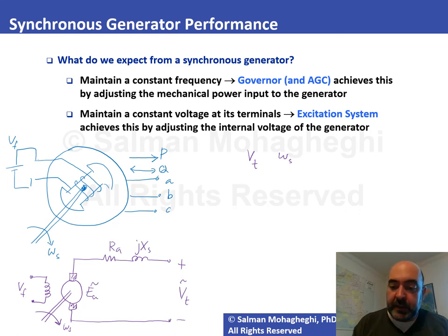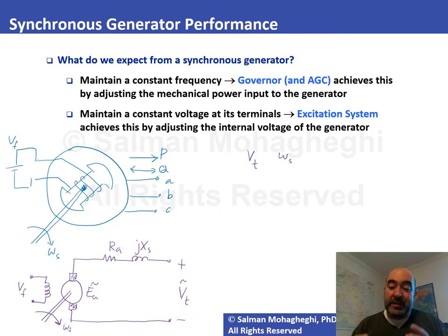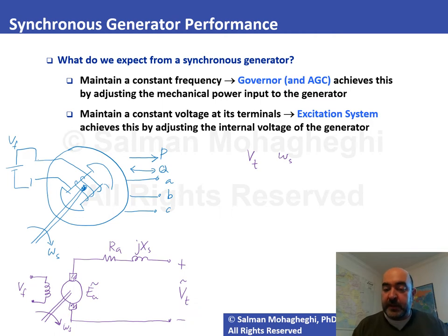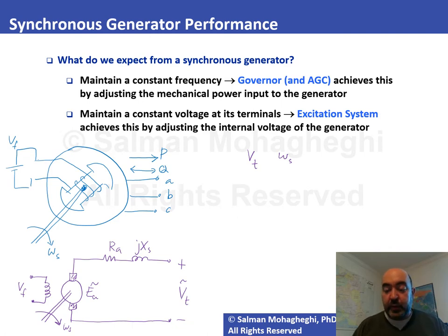The system frequency is directly related to rotor speed. If frequency is low, spinning the rotor faster increases it; if high, slowing it down reduces it. The controller responsible for maintaining rotor speed is the governor system, which monitors output frequency and speeds up or slows down the prime mover accordingly. The excitation system is responsible for controlling the terminal voltage magnitude, adjusting the internal voltage to keep V_T at, for example, one per unit.